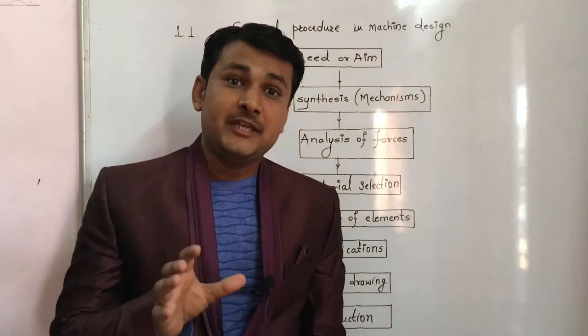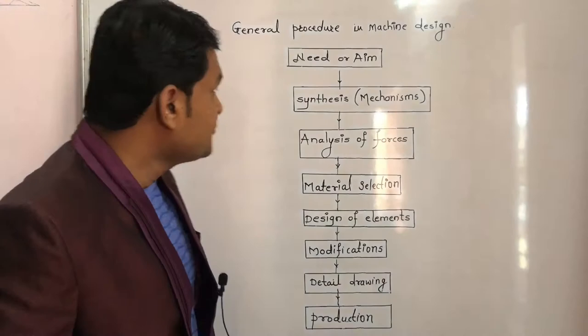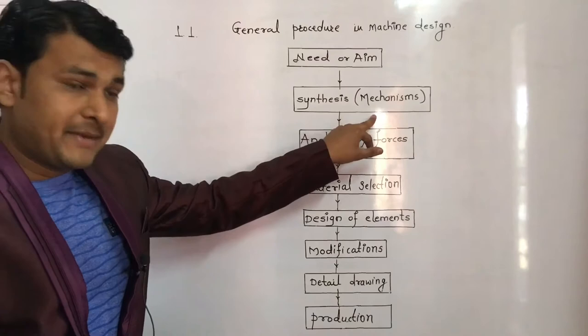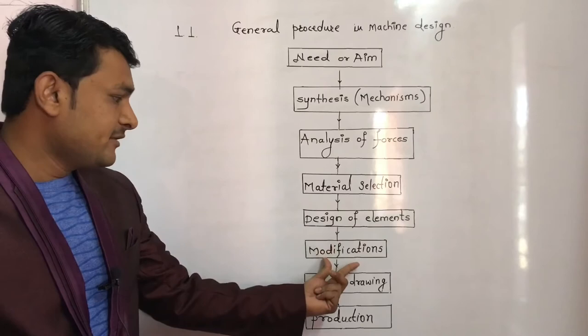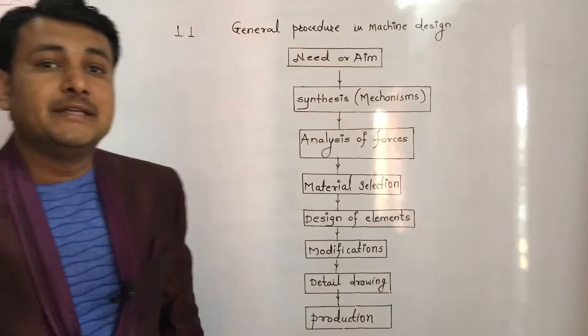Whenever we are designing any machine or machine component, there is a general procedure that we have to follow. I have drawn here a flowchart. In this flowchart, I have shown Need or Aim, then Synthesis or Mechanisms, then Analysis of Forces, Material Selection, Design of Elements, Modifications, Detail Drawing, and the last one is Production.